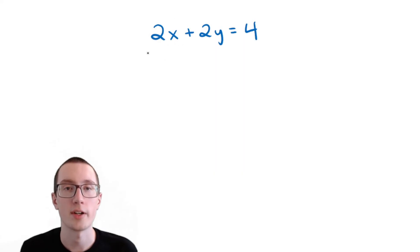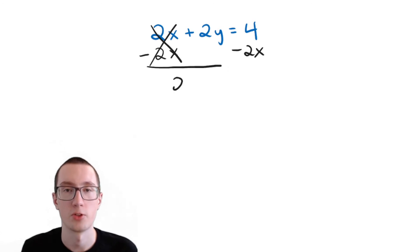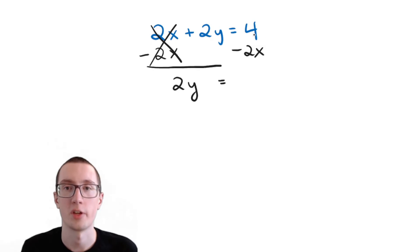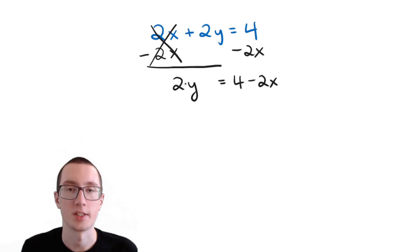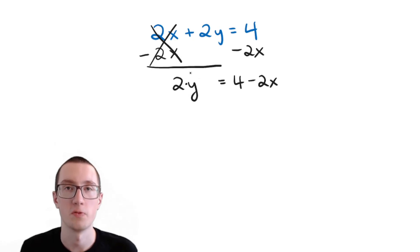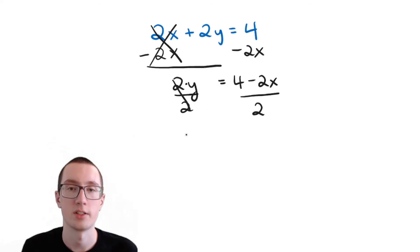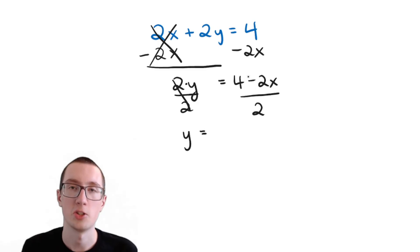We can get rid of this 2x by subtracting it from the equation. These cancel out, and on this side we're just left with 2y. On the other side, we have 4 minus 2x — you can't subtract a number and another number with a letter in it, so we'll just leave it as that. Now we can get y by itself by noticing that this is multiplication and doing the opposite of multiplication, which is division. So we can get rid of this 2 by dividing both sides by 2. These cancel out, and on this side we're left with y. On the other side, we are dividing by 2, and we have to divide both of these terms by 2.